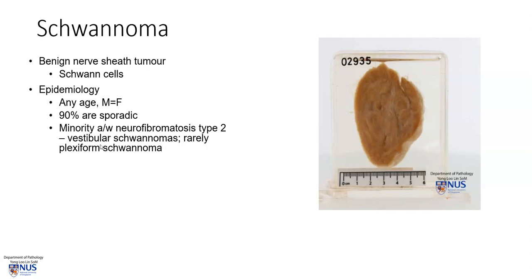In this syndrome, we will see vestibular schwannomas, which are often bilateral, arising in the vestibular nerve in the intracranial cavity. And rarely, we may also see a plexiform schwannoma, which is a multinodular tumor that arises from several nerves.